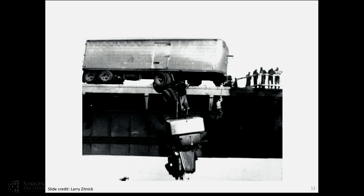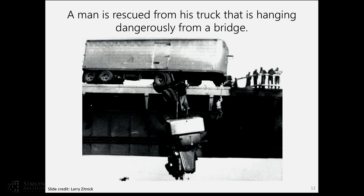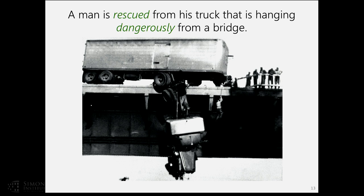But think about describing an image where a man is rescued from a truck hanging dangerously from a bridge. Machines today might output 'man, bridge, hanging, truck,' but to say words like 'rescued' and 'dangerous,' the system needs a sense of what happened just before the image was taken, what is likely to happen a few seconds after, and what the intentions of people in the scene probably are. You need common sense understanding of the world to produce outputs like this.